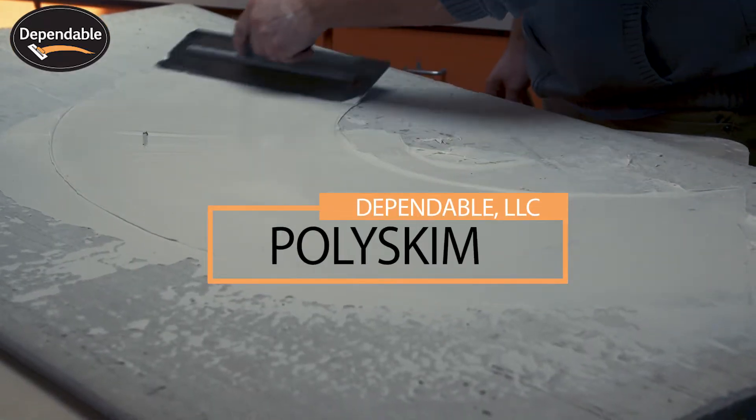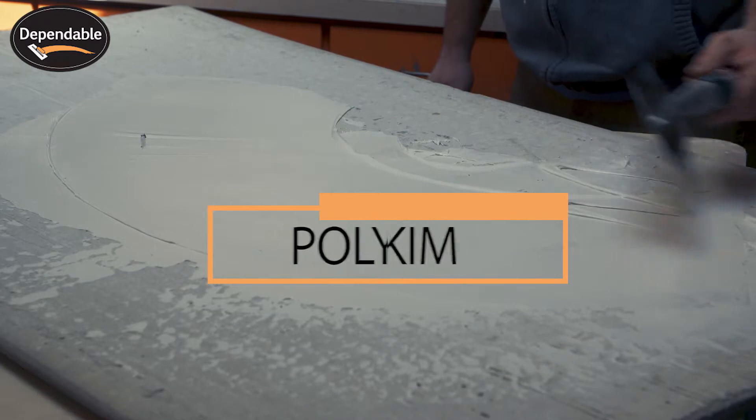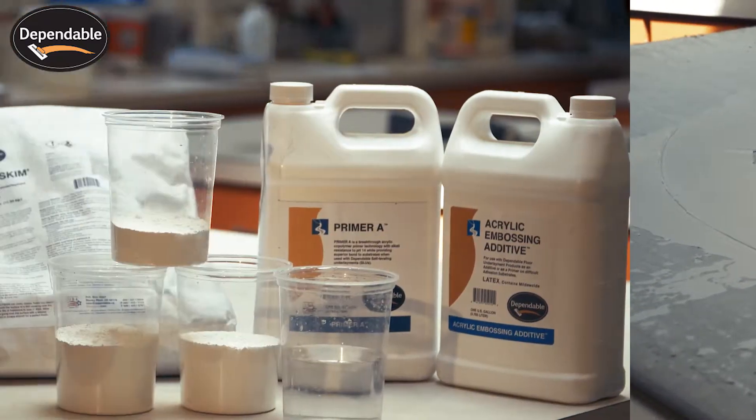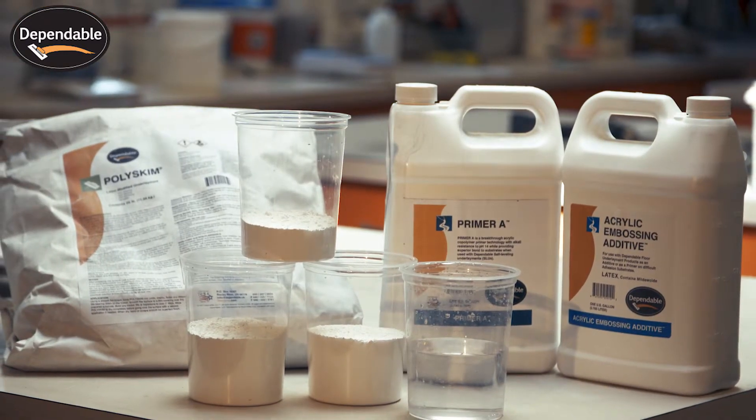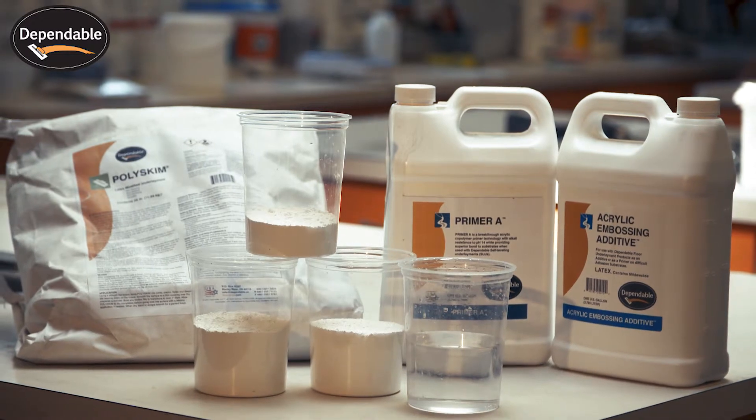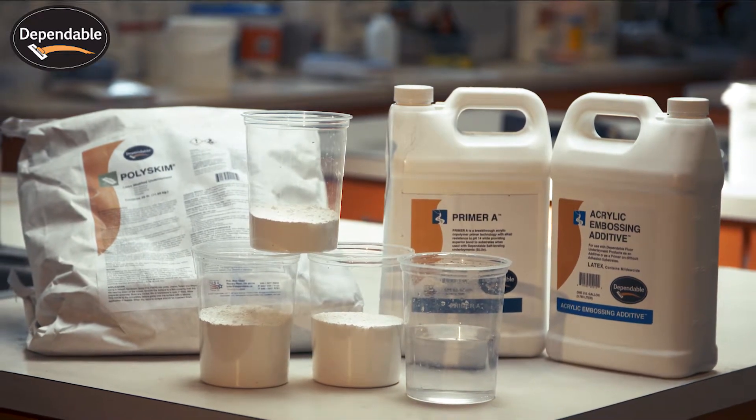Introducing Dependables Polyskim, a premium polymer modified gypsum skim coat. Polyskim is a fast drying and creamy product perfect for smoothing out wood and gypsum surfaces.